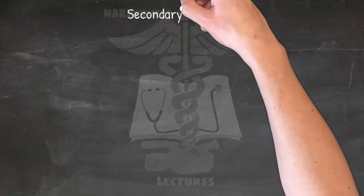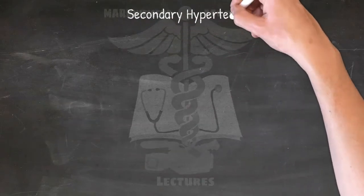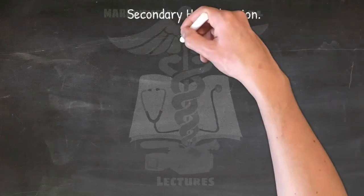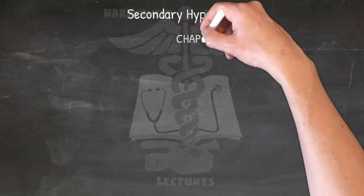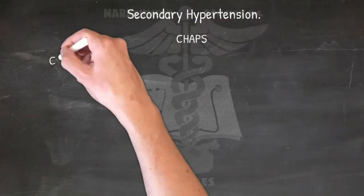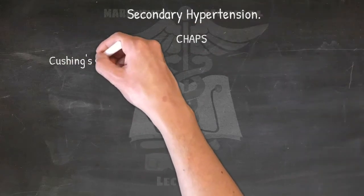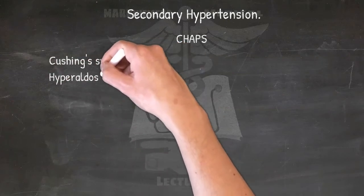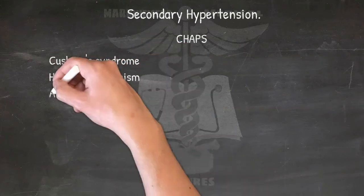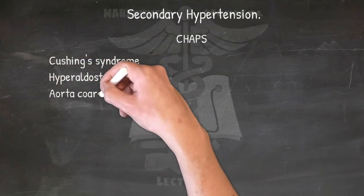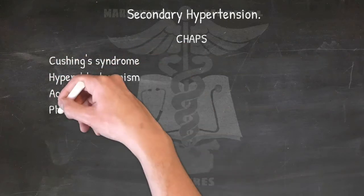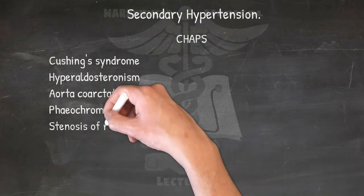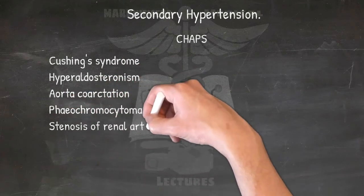Causes of secondary hypertension: CHAPS — Cushing's syndrome, Hyperaldosteronism (also known as Conn's syndrome), Aortic coarctation, Pheochromocytoma, and Stenosis of renal arteries. Note: only five percent of hypertension cases are secondary; the rest are primary.